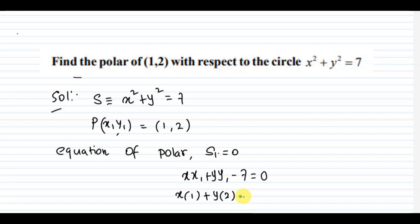So, what is S1? From the notations, we know that it was xx1 plus yy1 minus 7 equal to 0. In the place of x1 y1, just replace these respective values.